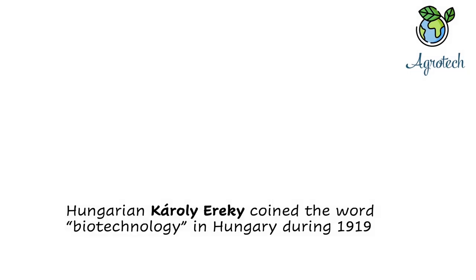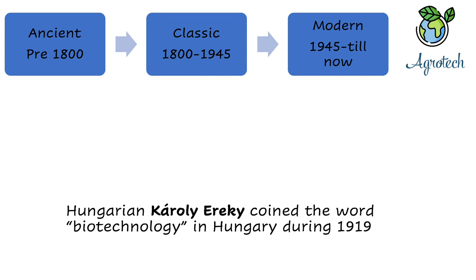I would like to go with the history of biotechnology and divide it into three main phases. First is the ancient phase, before 1800 AD. Second is the classic phase, between 1800 and 1945. Third is the modern phase, after World War Two, from 1945 to now. Ancient biotechnology developed after human civilization entered the agricultural era. I would like to call this the era of discovery, as ancient people were trying different methods and techniques to preserve food and make it portable while moving from place to place.